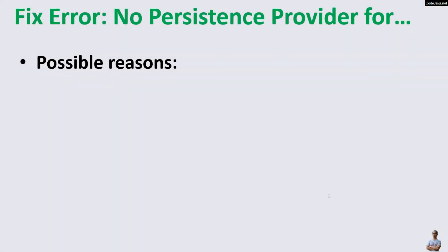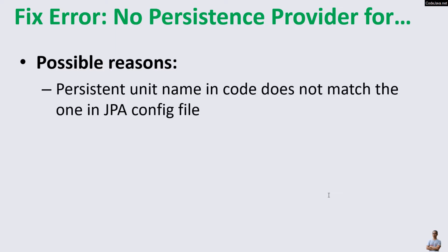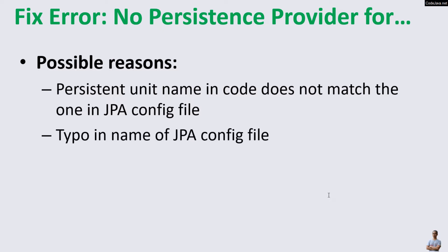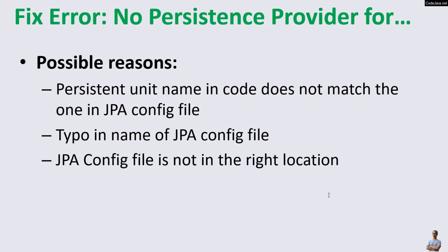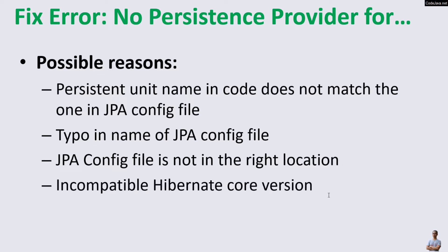There are four possible reasons that cause the error 'no persistence provider for entity manager'. The first one is that the persistence unit name in the code does not match the one in the JPA config file. The second may be a typo in the name of the JPA config file. The third reason is that the JPA config file is not in the right location. The last reason is an incompatible Hibernate core version.